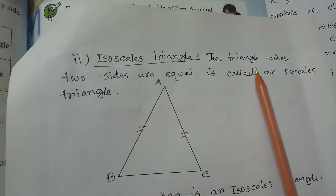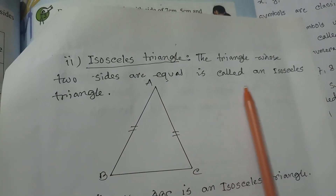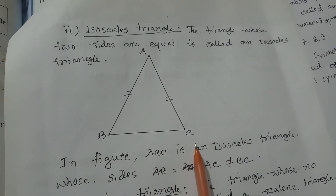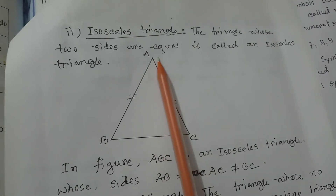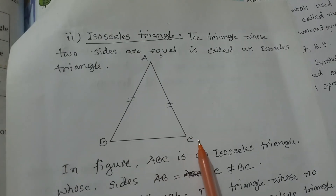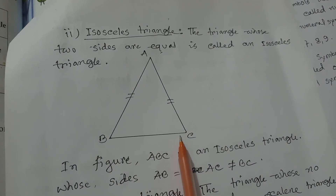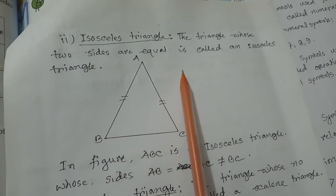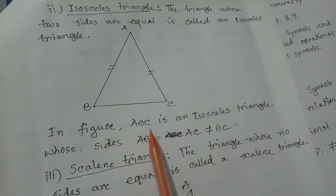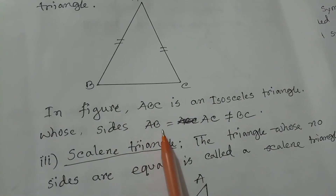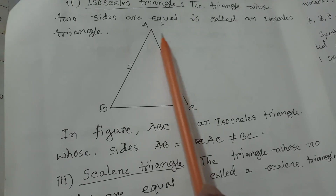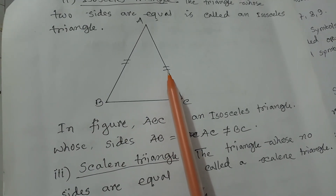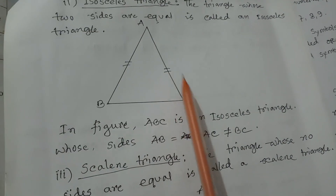The triangle whose two sides are equal is called an Isosceles Triangle. In the figure, ABC is an Isosceles Triangle, whose sides AB equal to AC, but not equal to BC. That means AB and AC are equal, and BC is different from these two sides.